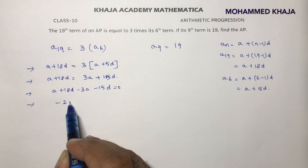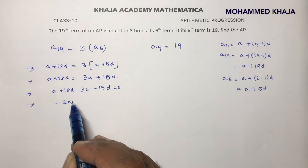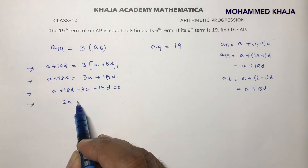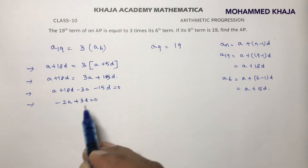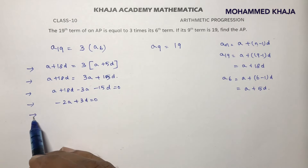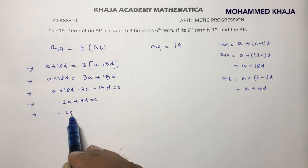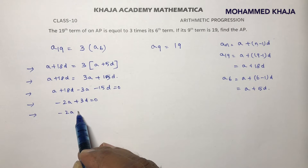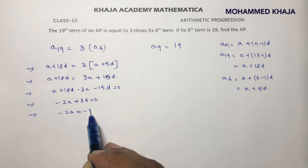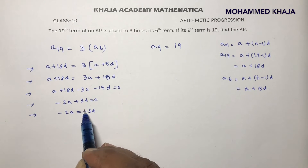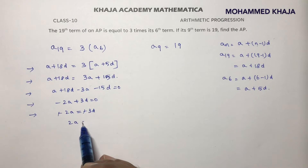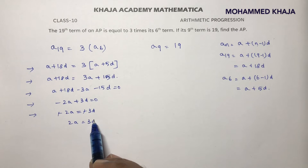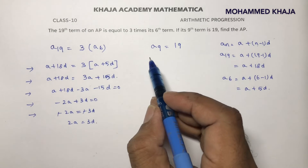A plus 18D minus 3A minus 15D equals 0. A minus 3A is minus 2A. 18 minus 15 is 3D. So, minus 2A equals minus 3D. The minus signs cancel, giving 2A equals 3D.